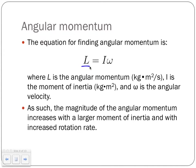Angular momentum L has units of kilogram meter squared per second. Its magnitude increases with larger moment of inertia and with higher rotation rate. Just as a heavier object has larger linear momentum, a harder-to-spin object has larger angular momentum. An object rotating faster also has higher angular momentum. These parallels to linear momentum should be intuitive.